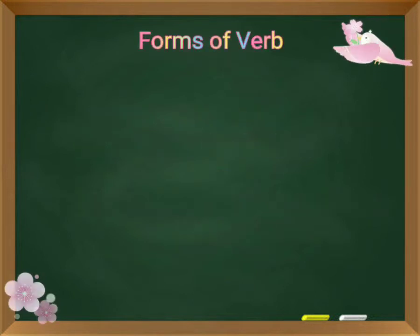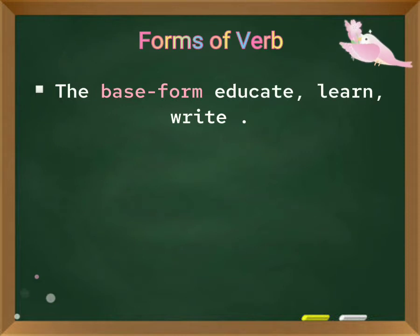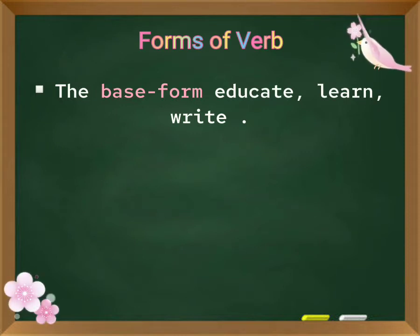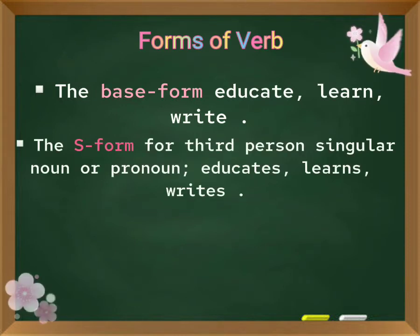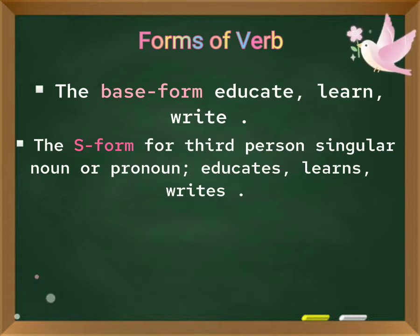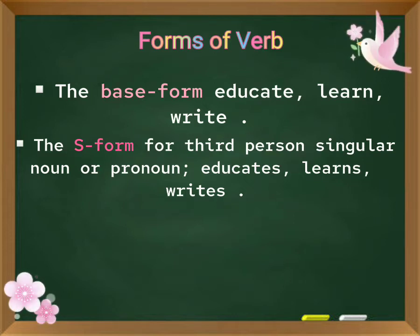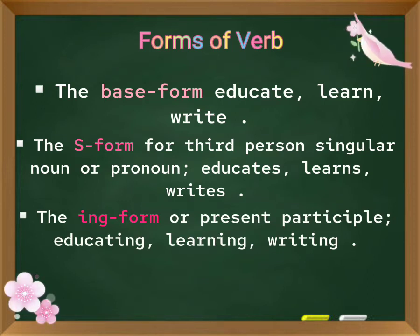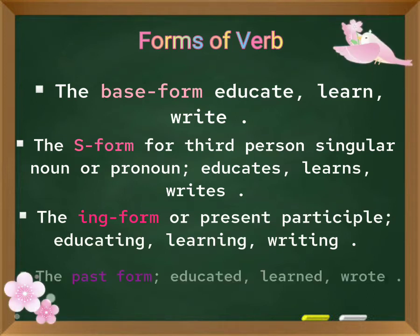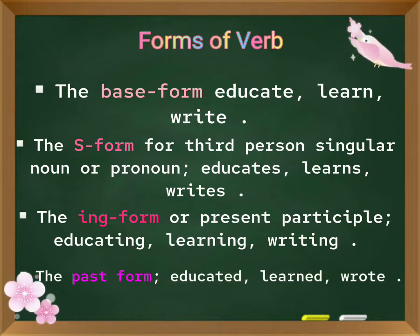Forms of verb. The base form: educate, learn, write. The S form for third person singular noun or pronoun: educates, learns, writes. The ing form or present participle: educating, learning, writing. The past form: educated, learned, wrote.